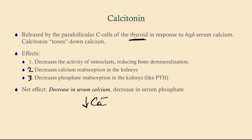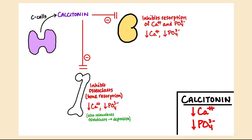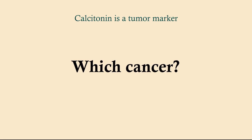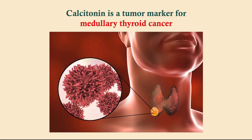The result of calcitonin release is a decrease in serum calcium and a decrease in serum phosphate. Importantly, calcitonin is also a tumor marker. Medullary thyroid cancer is a tumor of the parafollicular C cells — the calcitonin-secreting cells — so calcitonin is the marker for medullary thyroid cancer.